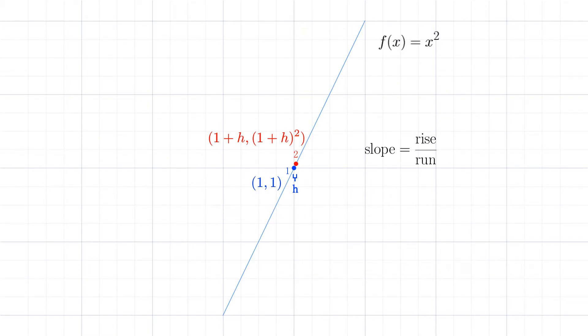The vertical distance is y2 minus y1, or f of x2 minus f of x1. f of x2 is equal to (1 plus h) squared, and f of x1 is equal to 1 squared. So the vertical distance is equal to (1 plus h) squared minus 1 squared.